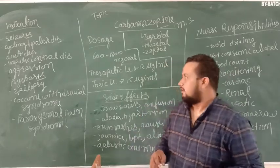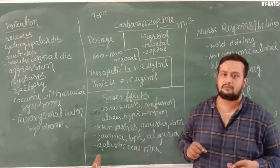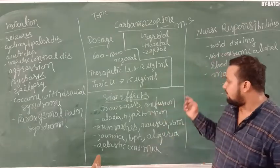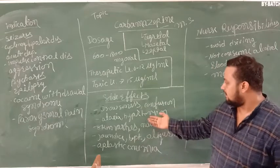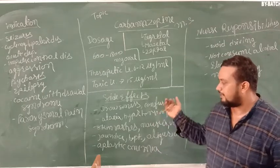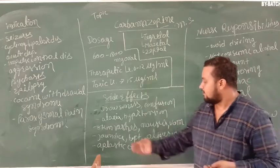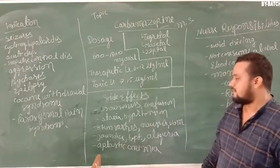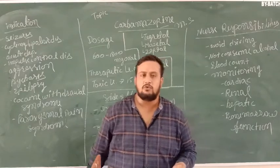The next level is the side effects of Carbamazepine mood stabilizer. First of all drowsiness, then confusion, then ataxia, uncoordinated movements. Ataxia means uncoordinated movements. Then hypertension, hypertension induced disease, seizures and convulsions. This can be used, then skin rashes, then nausea and vomiting, then hepatitis, oliguria, then aplastic anemia. So these are the basic side effects of the mood stabilizer Carbamazepine.